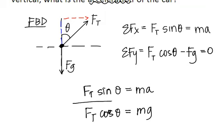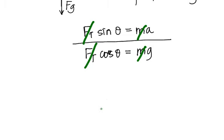So if I divide these two, what cancels out? Look at that. FT and FT and M and M. Were we given the angle? What's sine over cosine?